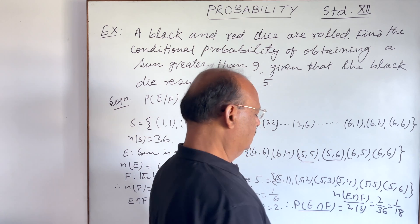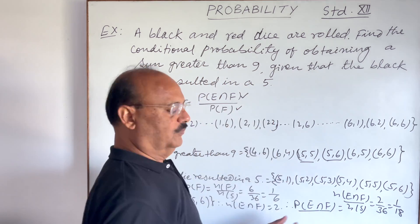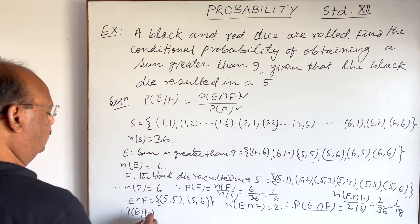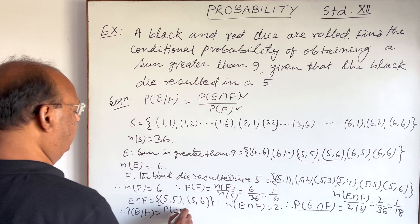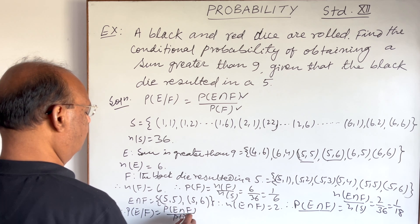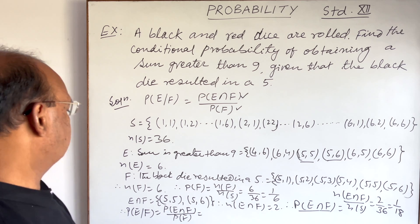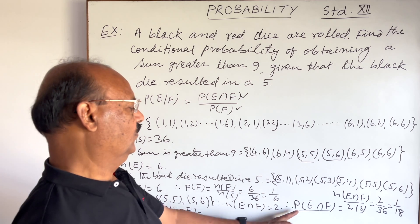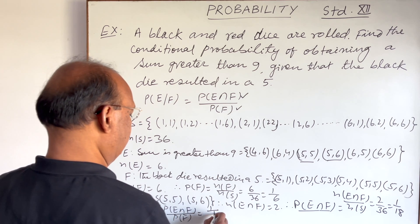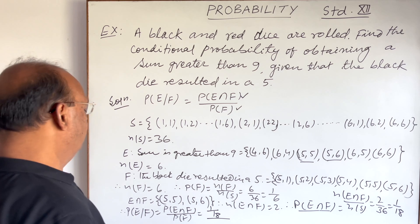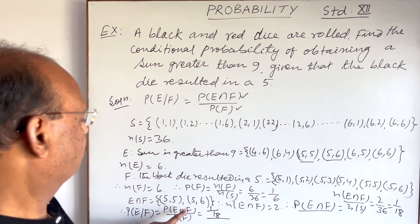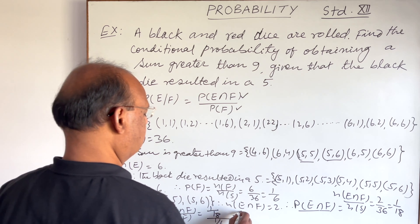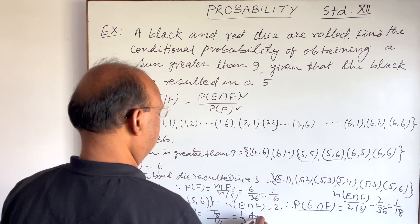We now have the value of P(E∩F). Therefore, the probability of E conditioned on F equals P(E∩F) divided by P(F). That is (1/18) divided by (1/6). By simplifying, we get 1/18 × 6/1 = 6/18 = 1/3. So the answer is 1 by 3.